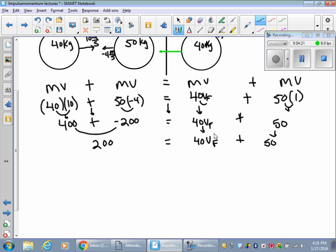Okay. Now I have to solve for V final. So I have to get rid of this stuff furthest away first. How do I get rid of plus 50? Minus 50. Whatever I do to one side, do to the other. Goes away. And then 200 minus 50 is 150. Equals 40 times my velocity final. To get rid of 40 times, divide by 40. The opposite of times is divide.